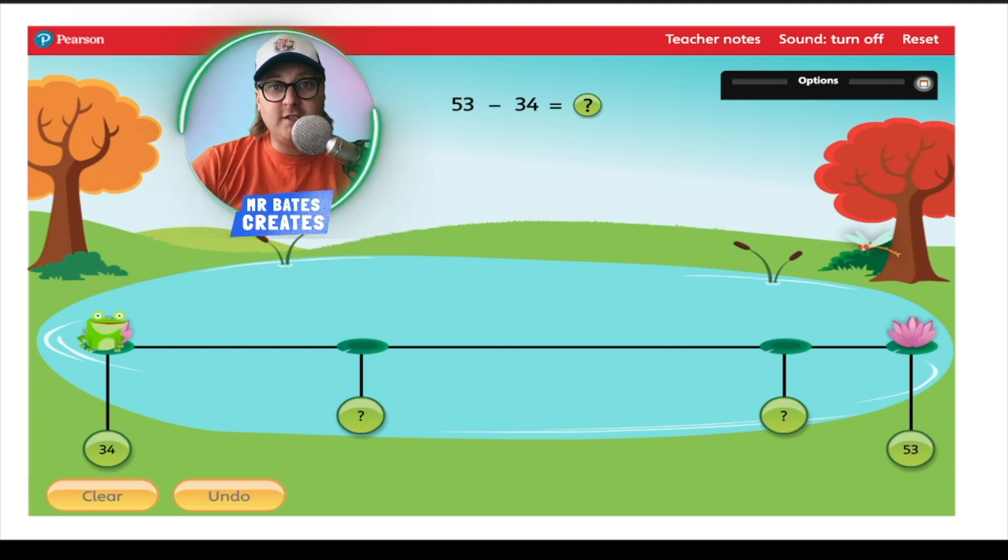So, we've got 34 and we've got 53. We're going to start off by putting 34 on our number line here at the bottom. There we go and Mr Frog is sat there ready to go. 34. Super!